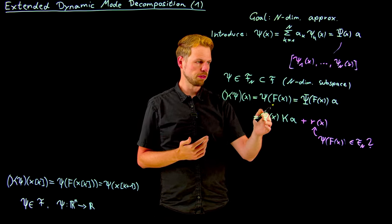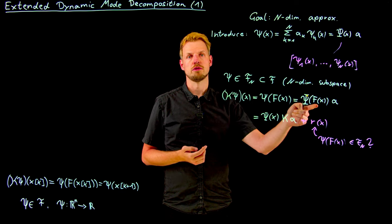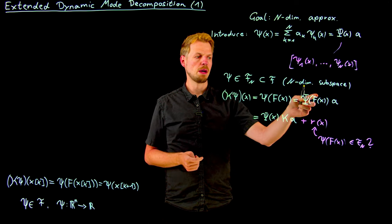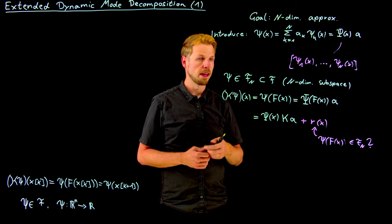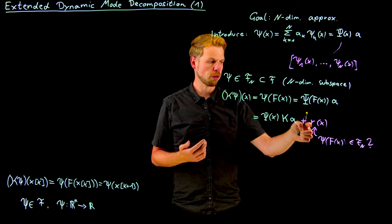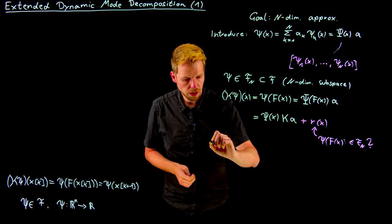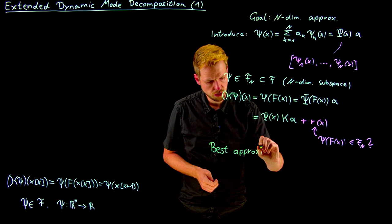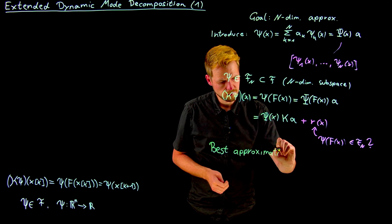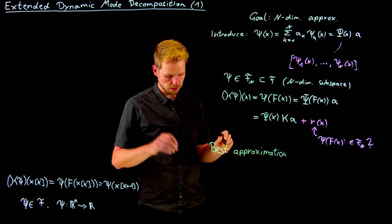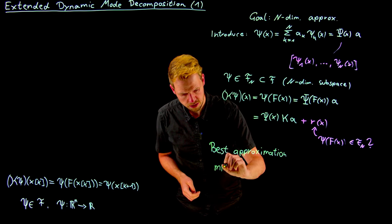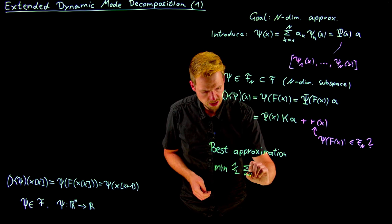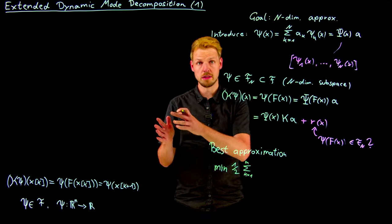So what we could say now is given trajectory data, so tuples x and f of x, consecutive time steps, we would like to find the matrix that gives us the best mapping between this one and this expression. What we see is that this is really a form of minimizing this residual. We can do so by solving a minimization problem, a standard least squares problem. Minimize over our data set, which can be now m samples or m tuples x and f of x.